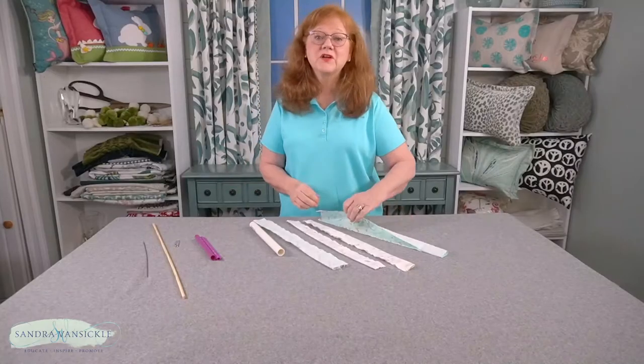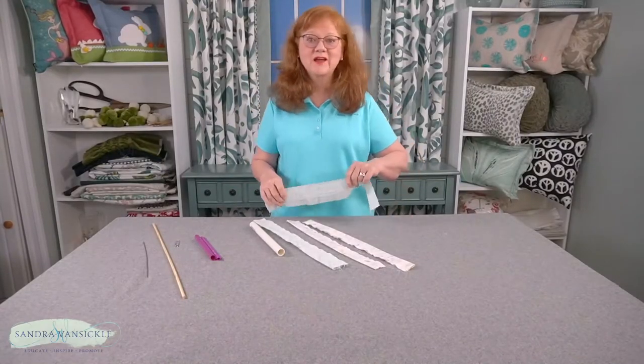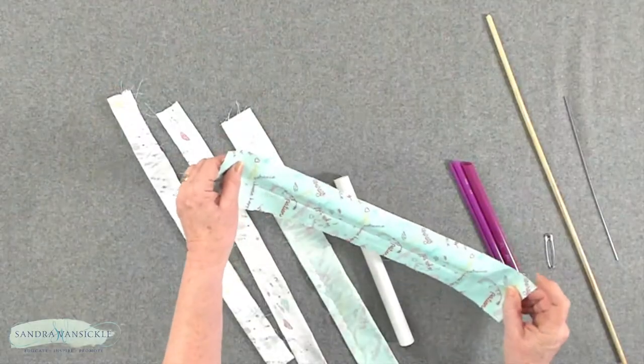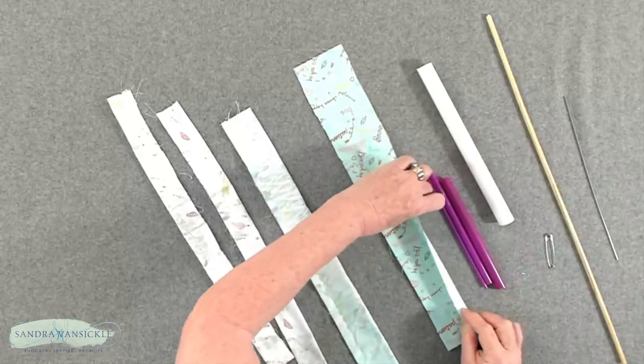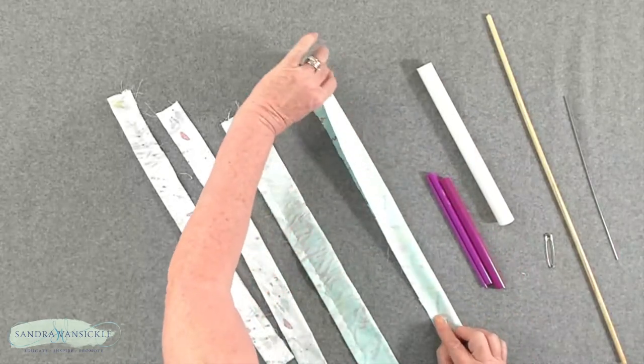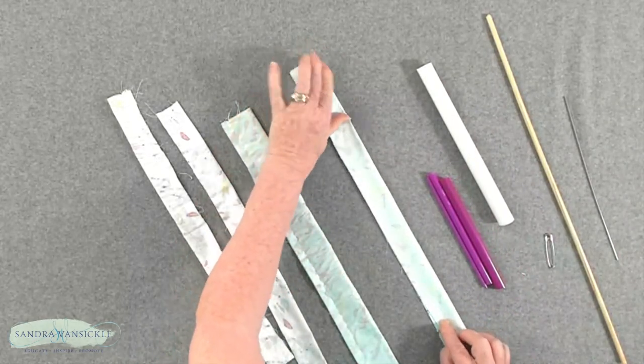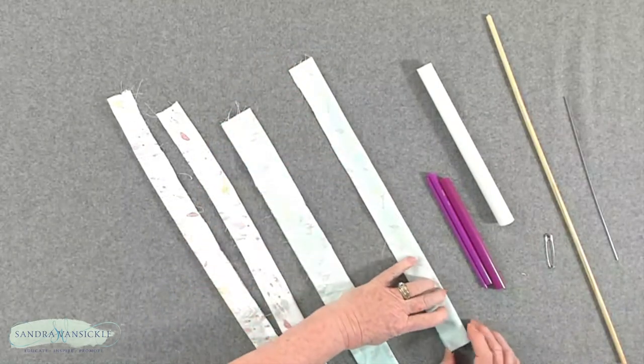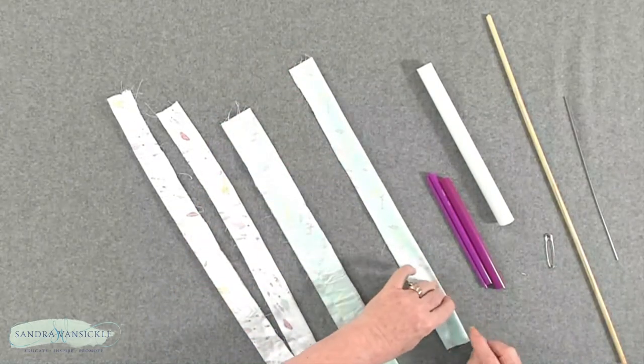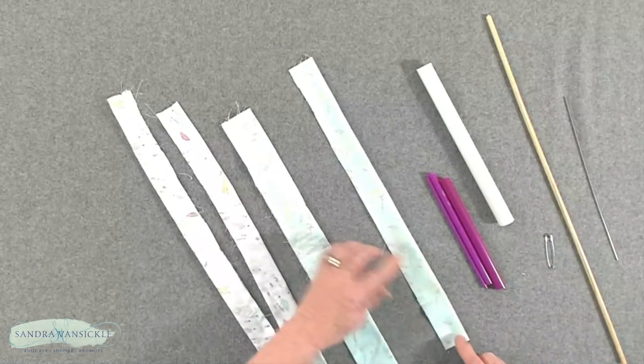The first thing you're going to need is a piece of fabric cut the length and the width of your tie. Then you're going to fold it in half and take it to the sewing machine. You're going to stitch down the long end and across the bottom.